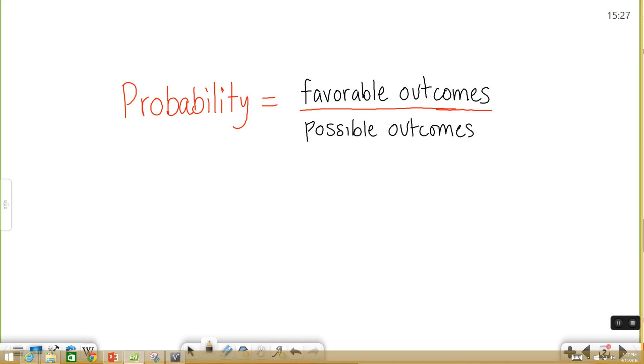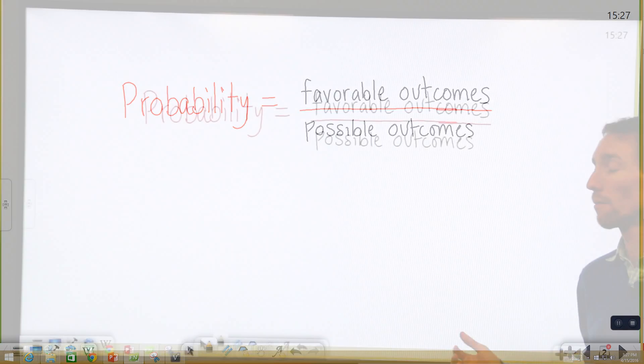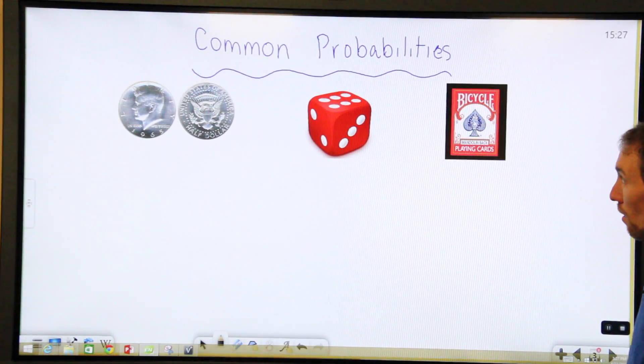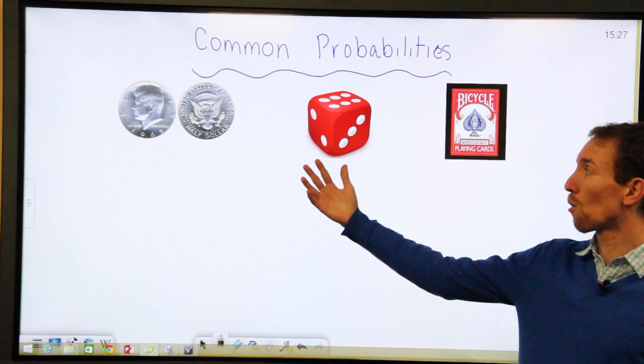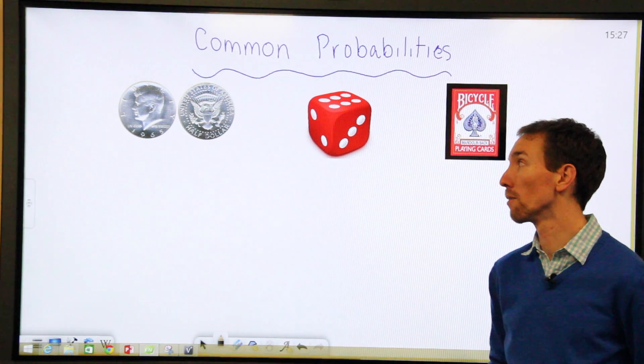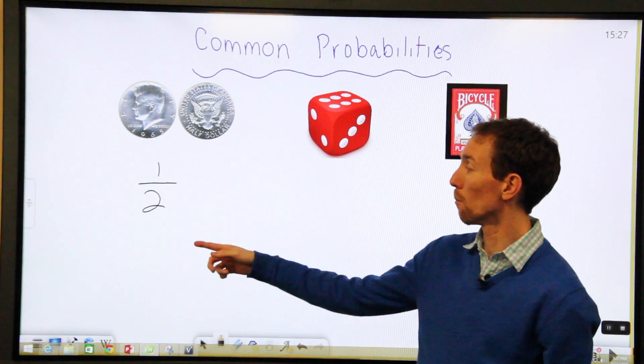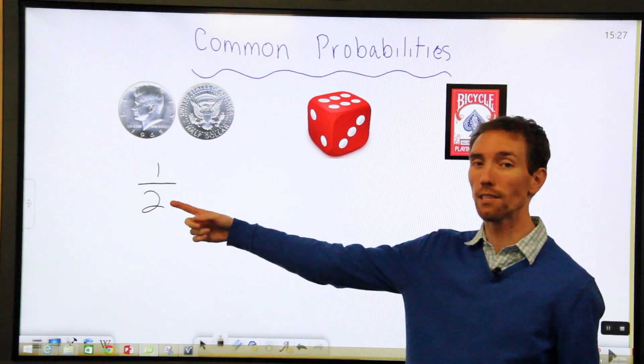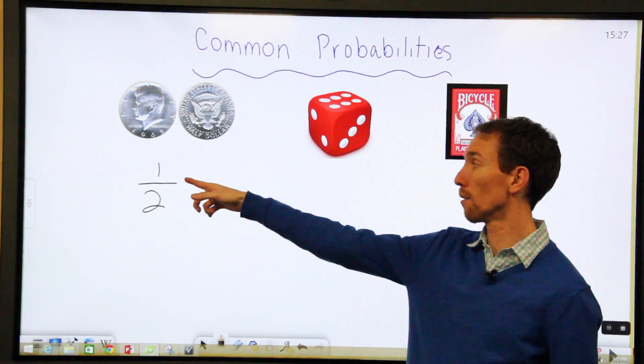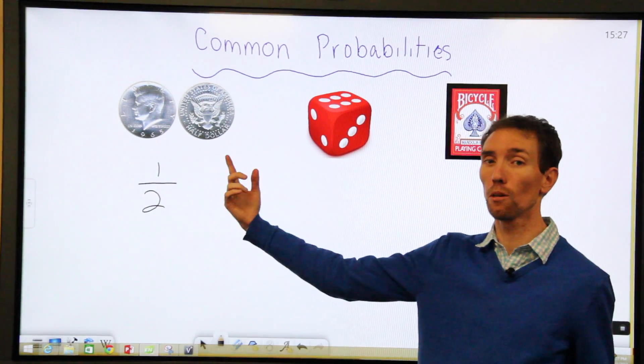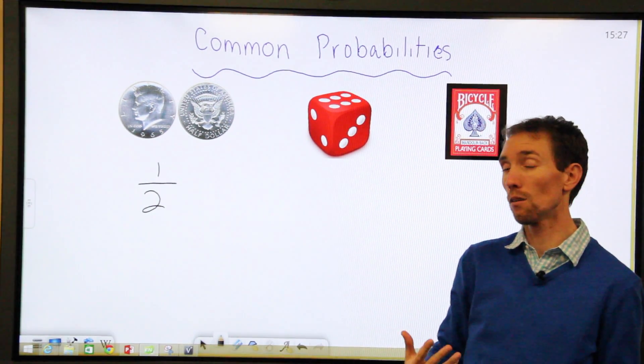So I'm going to show you some of the common probabilities that you've probably seen and heard before. You have flipping a coin. There's heads or tails. The probability with that is one half. The number of total possible outcomes is two, heads or tails. And the number of outcomes that you want is only one, because usually you want heads or you want tails.